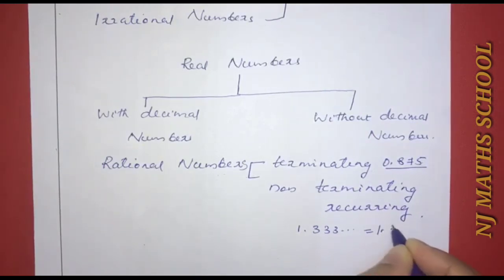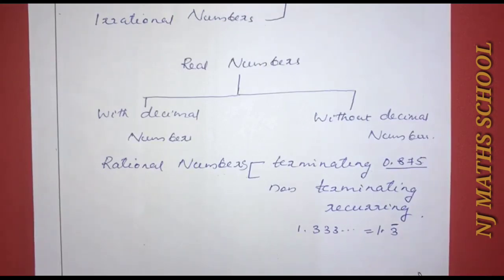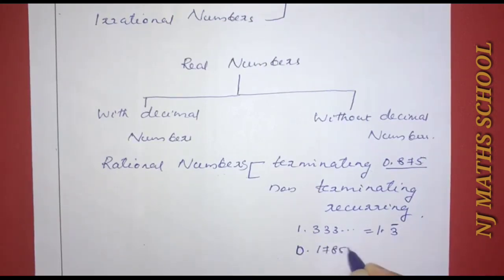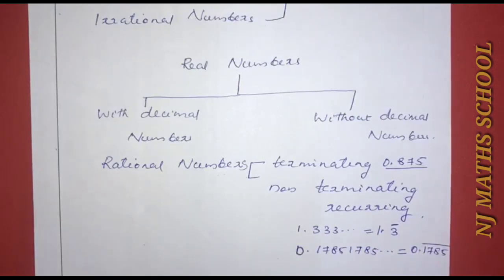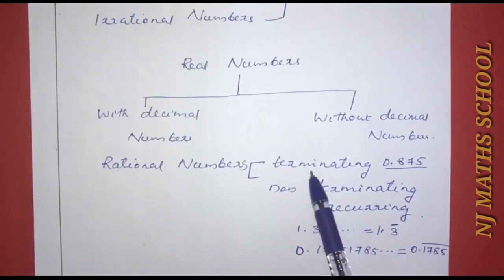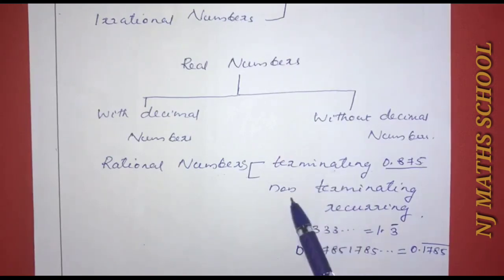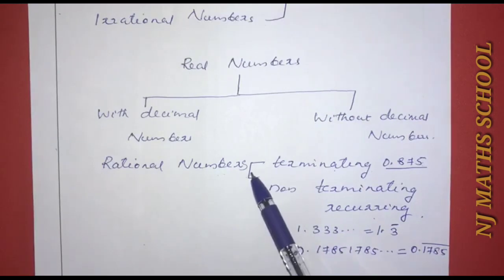1.3 bar — if a digit or group of digits repeats — is a non-terminating recurring decimal. For example, 0.1785... where some digits repeat. Non-terminating recurring decimals are rational numbers.